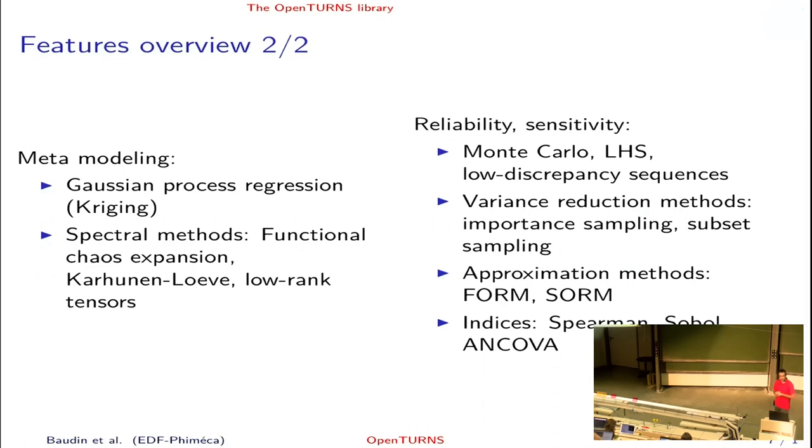There are also features for meta-modeling. Meta-modeling, you know this, is to replace the G function by a surrogate function which is faster to evaluate. It is useful, for example, in Monte Carlo simulation. We can have Gaussian process regression, which is also known as kriging. And we have also spectral methods, for example, functional chaos expansion, also known as polynomial chaos, Karhunen-Loeve decomposition, and low-rank tensors.